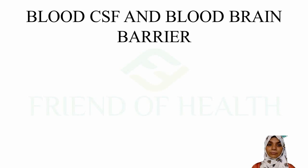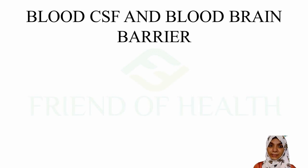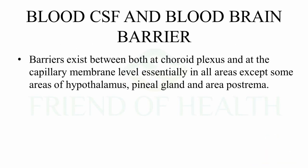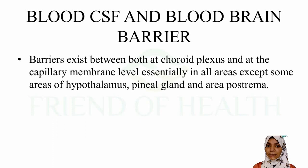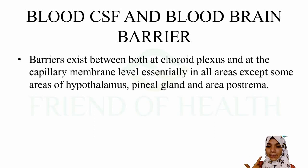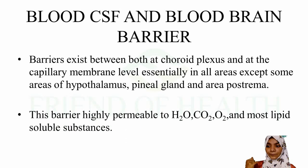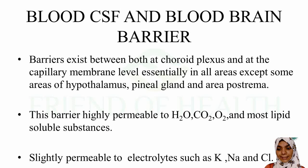There is a blood-brain barrier and blood-CSF barrier - the brain is selectively permeable to certain molecules. This barrier exists at the choroid plexus and at the capillary membrane level in all areas except the hypothalamus, pineal gland, and area postrema. The barrier is highly permeable to water, carbon dioxide, oxygen, and most lipid-soluble substances, and slightly permeable to electrolytes such as potassium, sodium, and chloride.